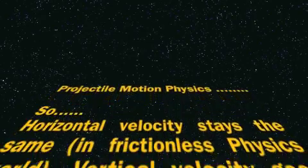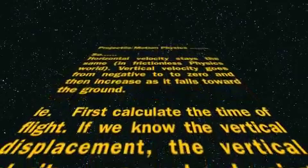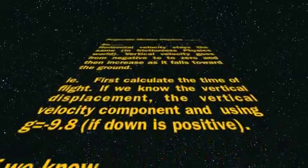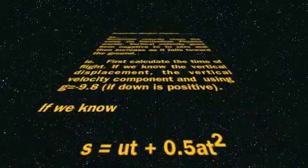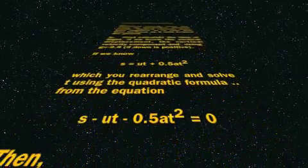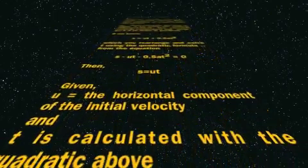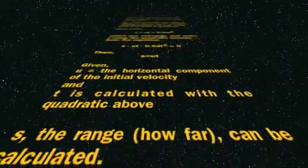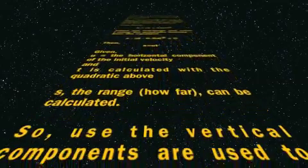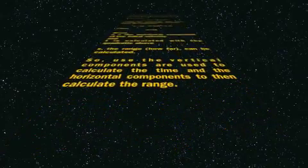To summarize: you've got a horizontal and a vertical component. What we have to do is first solve for time using the vertical components, and following that, we solve for the range — the horizontal displacement — using the time calculated from the vertical components. And that's about as hard as it gets.